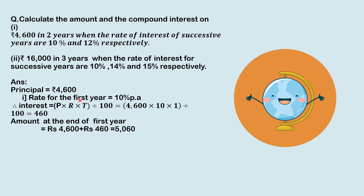For the first part, the principal is equal to 4,600. The rate for the first year is equal to 10%. So interest is equal to 4,600 × 10 × 1 ÷ 100, which is equal to 460. The amount at the end of the first year is P plus I, which is 4,600 plus 460, equal to 5,060.